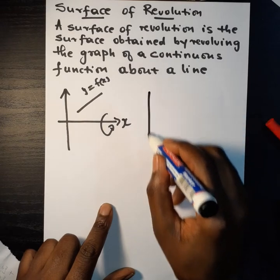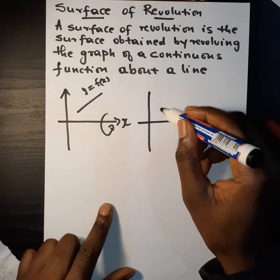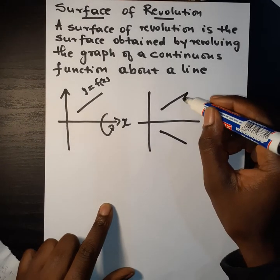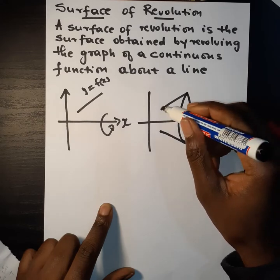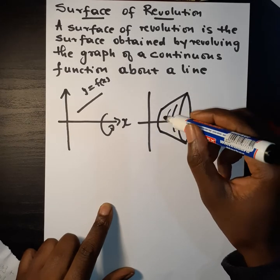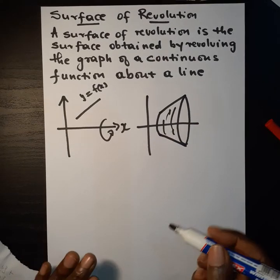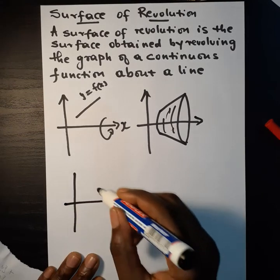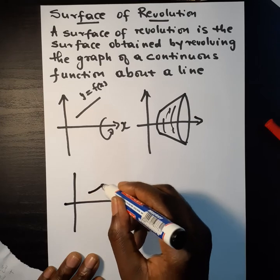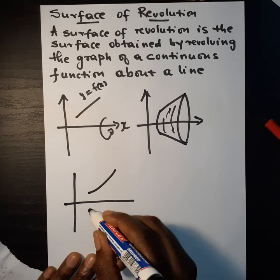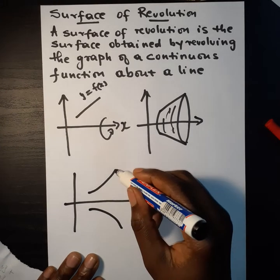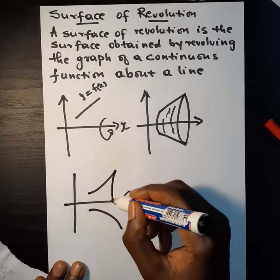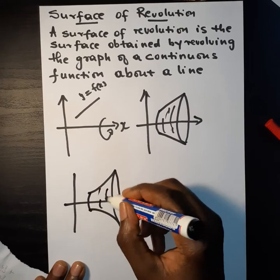We revolve it about the line y equal to 0, or the x-axis. If we do that, then we will obtain something like this — that straight line, when revolved, gives us a figure like that. Similarly, one can take a graph like that and revolve it about the x-axis, and again we will expect a figure like that.